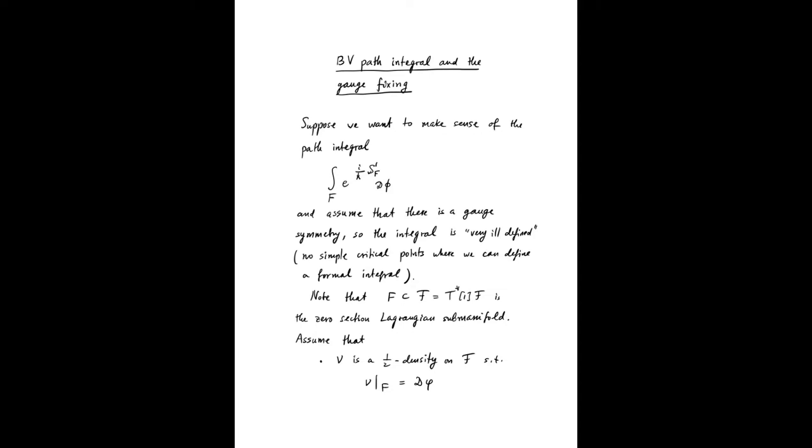BV path integral and gauge fixing. Suppose that we want to make sense of a path integral like this. It may have some complicated gauge symmetry. Because of the gauge symmetry, the integral is not defined. Even if you try to define a path integral as a formal integral, you will fail because the critical points are degenerate. So you cannot use the usual theory about Feynman diagrams.